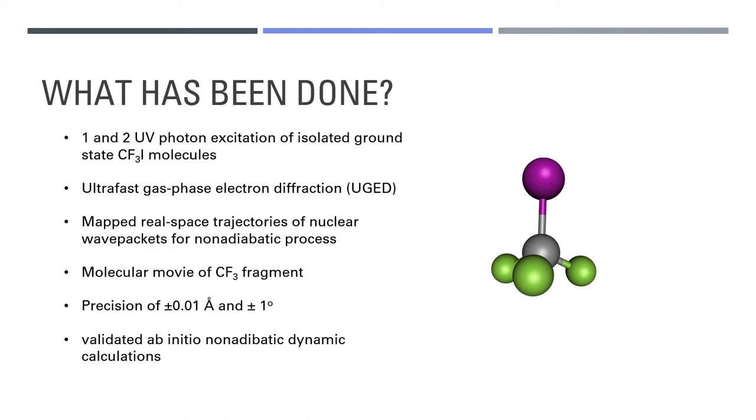The team have managed to produce what's known as a molecular movie for the CF3I fragment after the photodissociation where the nuclear positions were measured in real time. They've shown that ultrafast gas phase electron diffraction can measure molecular structure after photoexcitation of molecules in exquisite detail, even to an error of 0.01 angstroms for the bond length and 1 degree for the bond angle. These findings have set a standard for ab initio non-adiabatic dynamic calculations.